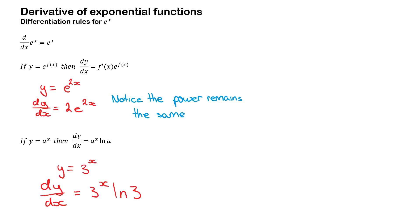If you have e to the power of something f(x), such as 2x, then when you derive it, the differentiation of the power comes out of the front, but the power remains the same. In the example there, you can see y equals e to the power of 2x. The differentiation of 2x is 2, so 2 comes out of the front as the coefficient, and then e to the power of 2x remains the same.